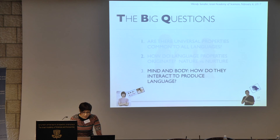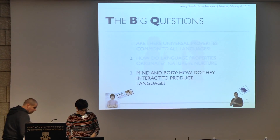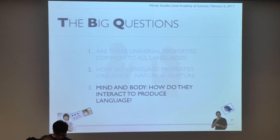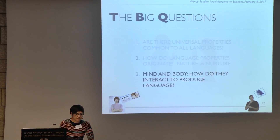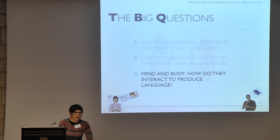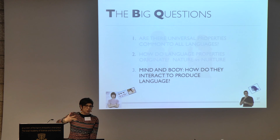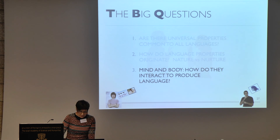Finally: mind and body — how do they interact to produce language? Chomsky famously called language a computational system in the mind and said that the sensory-motor system — the way we convey and perceive it — is secondary and not important. Others believe that you can't really understand the mind, or any aspect of the mind, without also understanding the body.